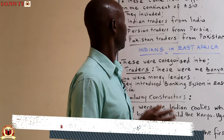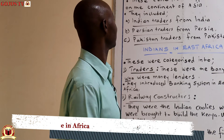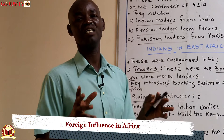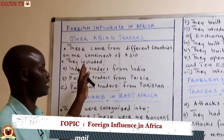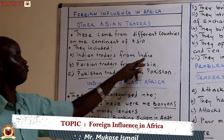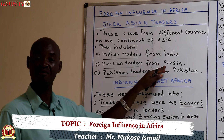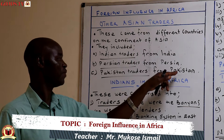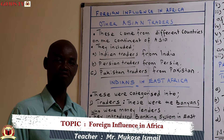Welcome candidates to the second session of our lesson. We are going to look at other Asian traders. When we say Asian traders, most of the traders came from the continent of Asia and these came from different countries. For example, we have the Indian traders who came from India, the Persian traders who came from Persia, and the Pakistani traders who came from Pakistan.